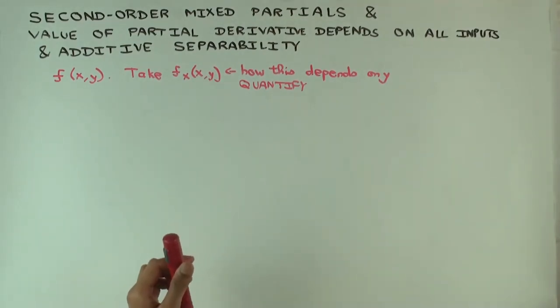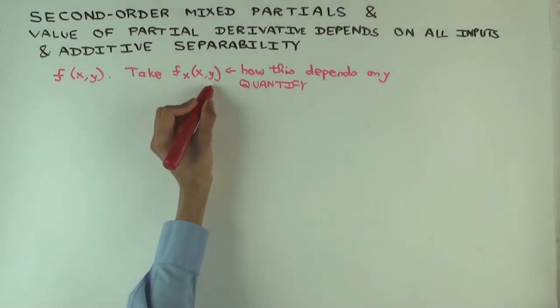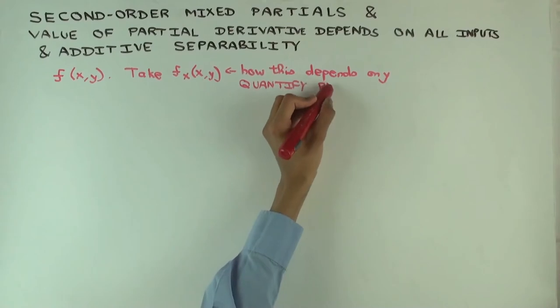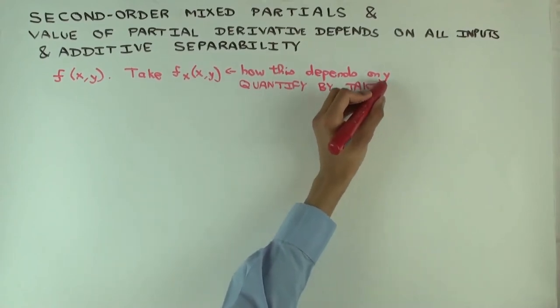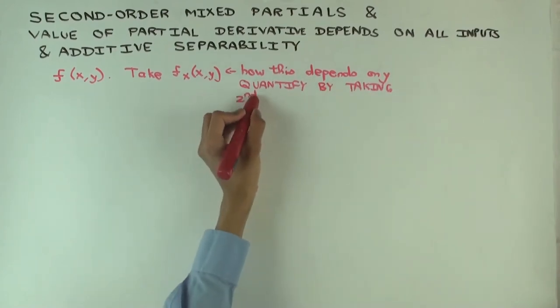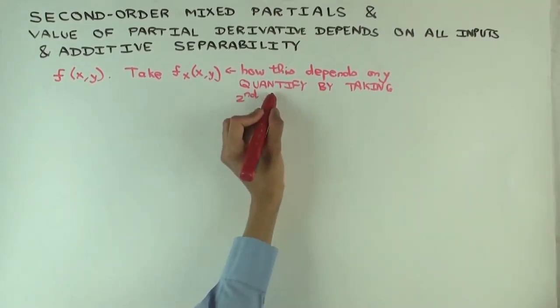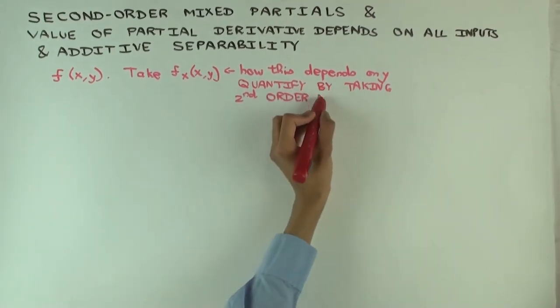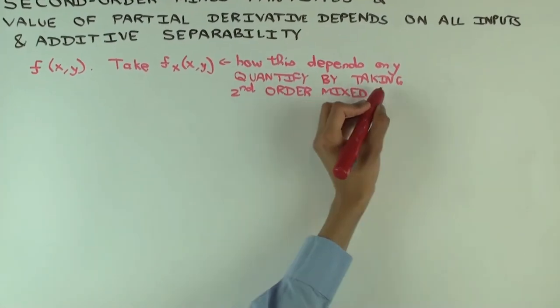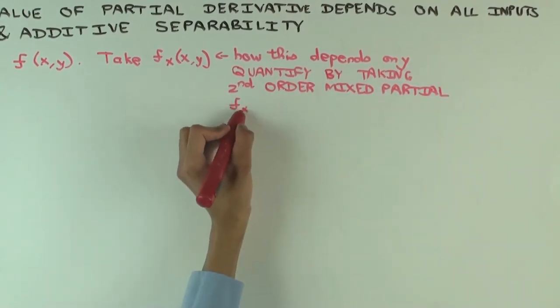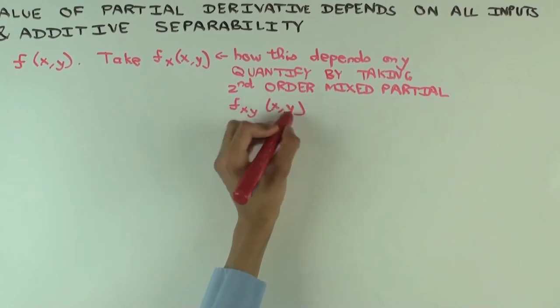Now, if you haven't seen second order mixed partial, you can treat this as sort of a motivation, a motivating situation or a motivating setup for that. If you have seen them, this is just like a quick review of that. To quantify this by taking the second order mixed partial. What mixed partial will that be? F sub xy. Second order mixed partial. And in this case, it will be F sub xy of x comma y.